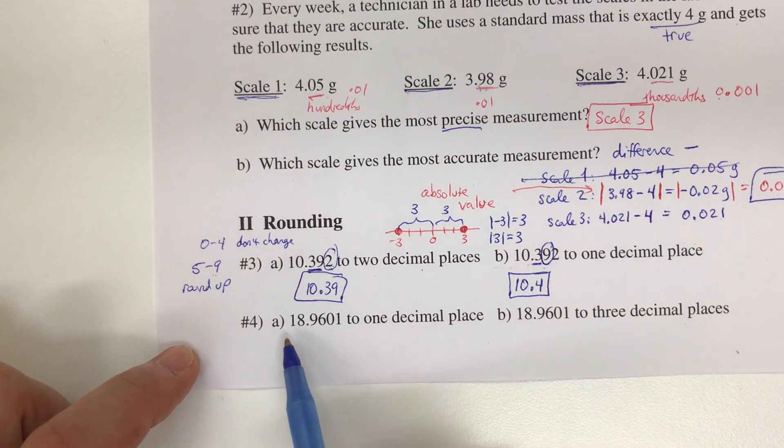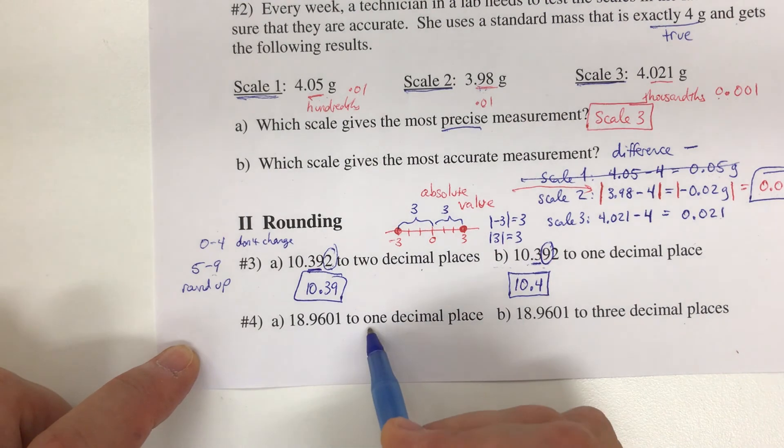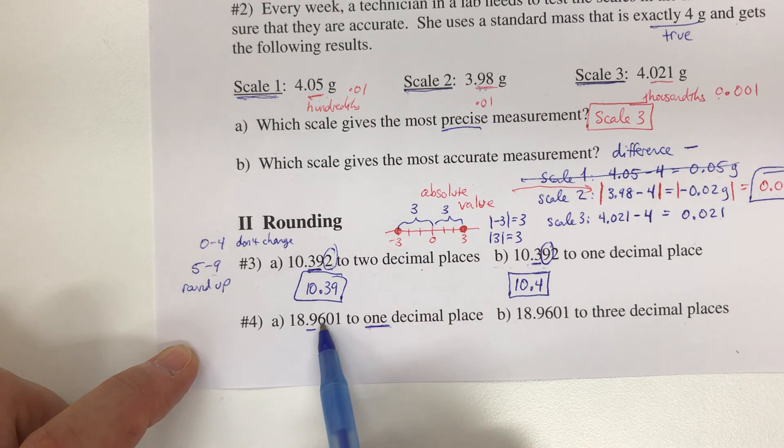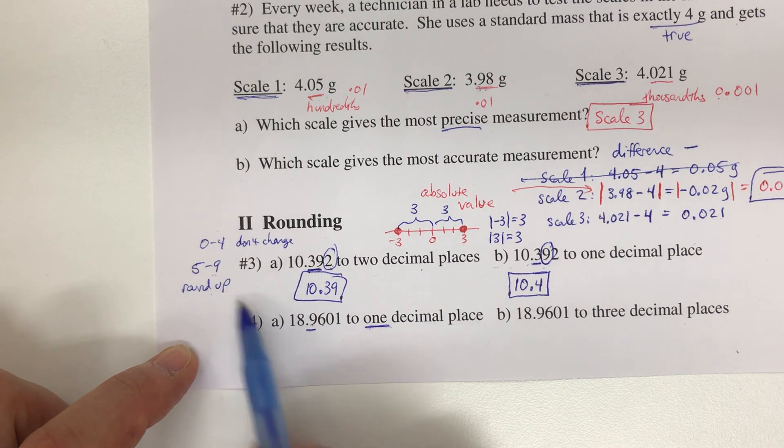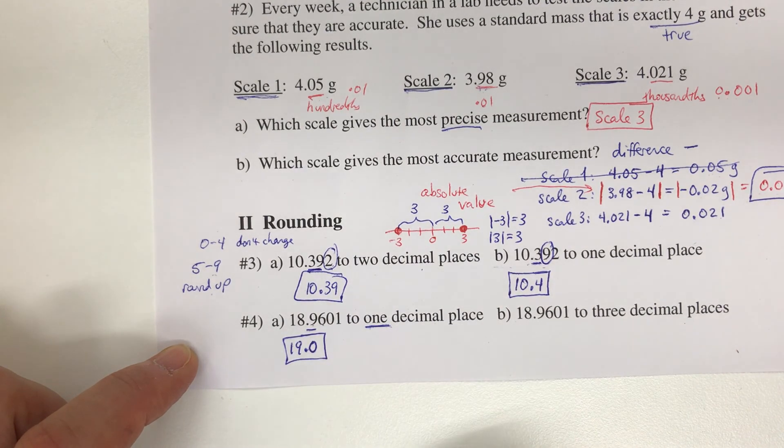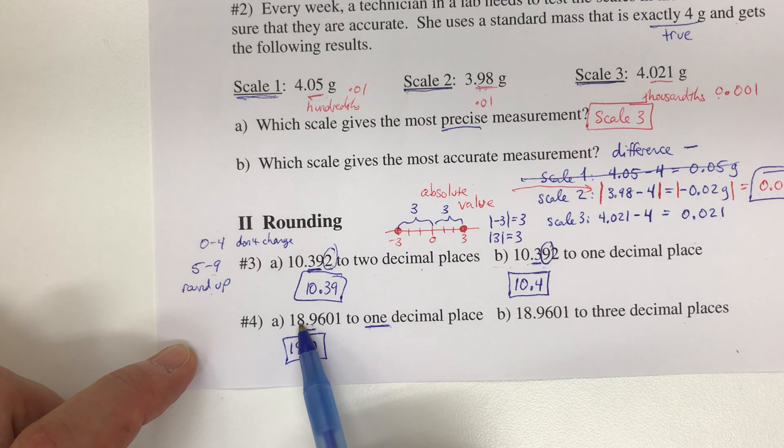For 18.9601 to one decimal place, we have 18.9. The next digit is a 6, which means we have to round up. This is tricky because the next digit from 9 would be 10. I can't write 10—I round this up to 0, but when I do that, this changes from 18 to 19. I would write my answer as 19.0. Sometimes when I round here, I may also have to change the number to the left of that.